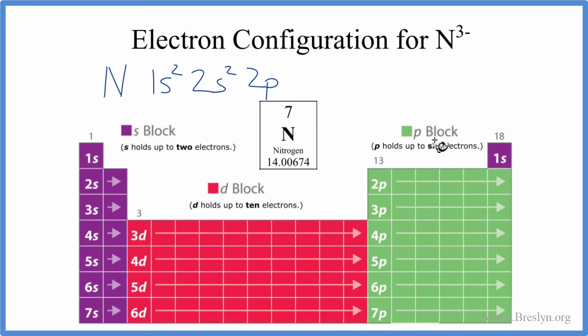p can hold up to six, but we only need three more to get seven here. Two plus two plus three, that'll give us seven. So we're just going to put three in there, and that's the electron configuration for just neutral nitrogen, like on the periodic table.